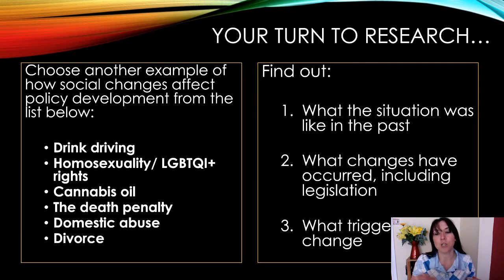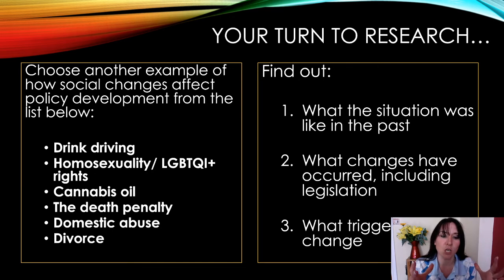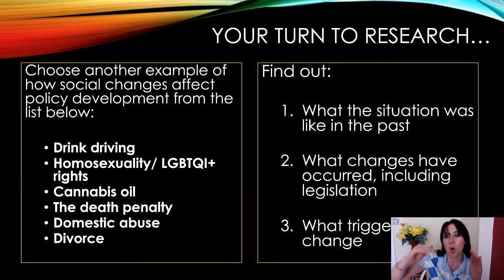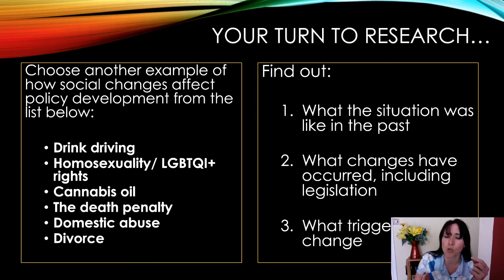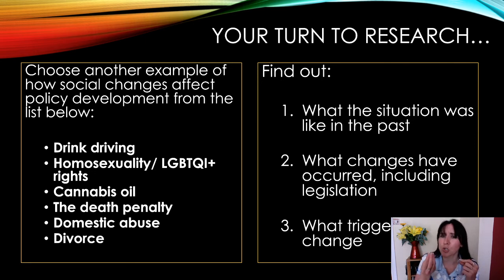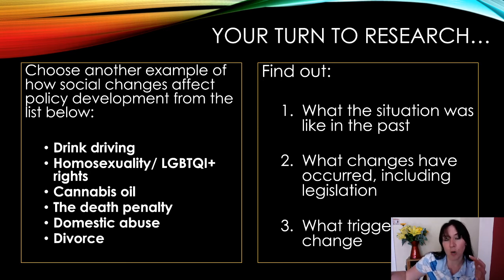Students also looked into their own example from the following list: drink driving, homosexuality and LGBTQI+ rights, cannabis oil, the death penalty, domestic abuse, or divorce. Again, those three things: what was the situation like in the past — for homosexuality there's so much online, look at things like marriage laws — what laws have changed, and what triggered the big changes? What happened that triggered social change to then start having this effect on policies and laws for the LGBTQI+ community?